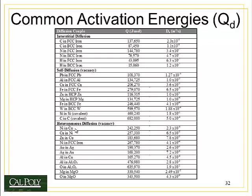There are also heterogeneous diffusion couples — of two different types. For example, nickel diffusing into copper and copper diffusing into nickel. Because copper and nickel are so close in size, their activation energies are almost exactly the same. Nickel moving into FCC iron requires about 270,000 joules per mole — much higher than carbon, hydrogen, or nitrogen moving into FCC iron — because a large impurity atom moving via vacancy diffusion instead of interstitial diffusion takes a lot more effort.